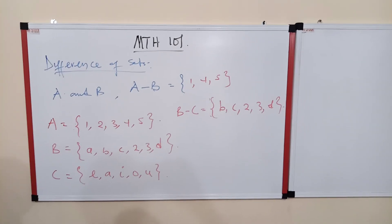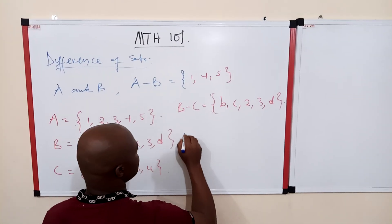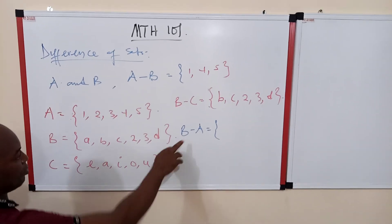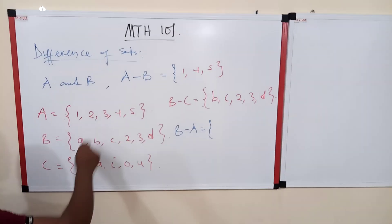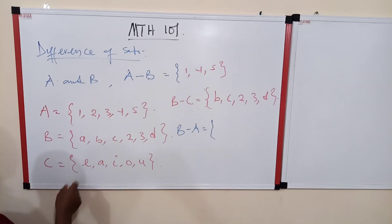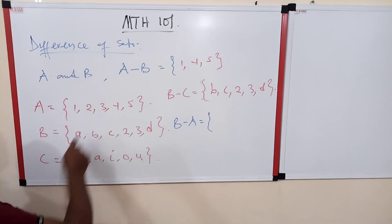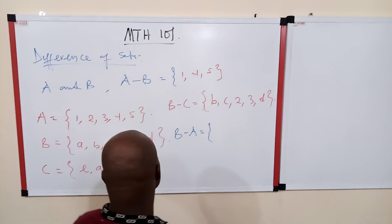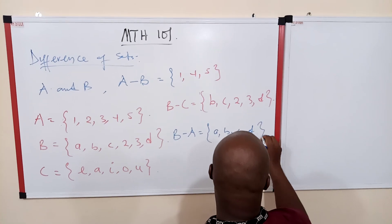We can also consider B minus A — that is, all elements in B which are not in A. Now 2 and 3 appear in both sets, but the alphabetical elements A, B, C, and D are not in A, since A contains only numerical elements. So the elements that are in B but not in A are {A, B, C, D}.